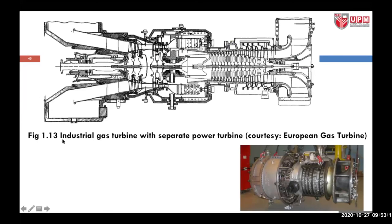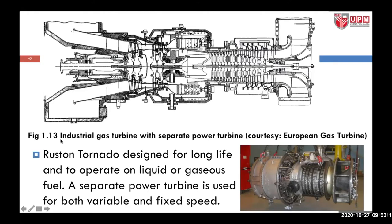Here in Figure 1.13 is a Ruston Tornado industrial gas turbine with a separate power turbine. We have shown earlier the type of gas turbine engine connected to a power turbine. It uses liquid or gaseous fuel. A separate power turbine is used for both variable as well as fixed speed operation.